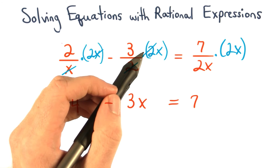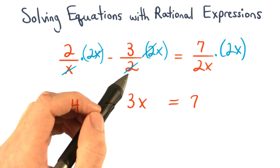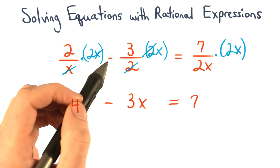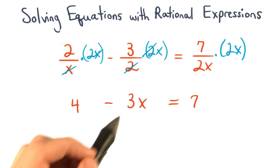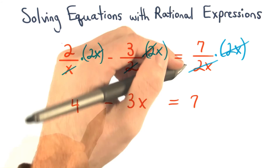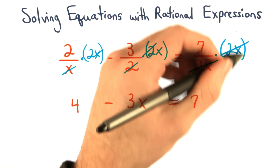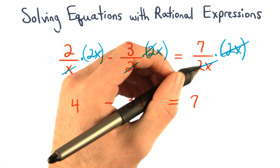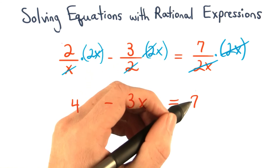For the second term, the factors of 2 would cancel to leave us with negative 3x. And for our last fraction or term, we would simply have 7.